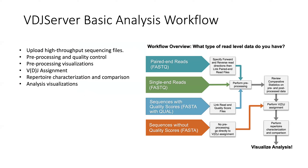The basic workflow for VDJ Server depends a little upon what type of read data you're starting with. If you're starting with paired-end or single-end reads coming right off the sequencer, you often need to do some pre-processing. After pre-processing, you typically look at some statistics to see if you're at the quality level you want. After that, you annotate those sequences with VDJ calls and other sequence annotations, and then finally you get to perform analysis and visualize those results.